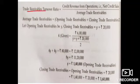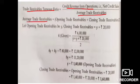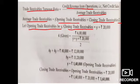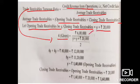Trade receivable turnover ratio = credit revenue from operation / average trade receivable. We know the ratio is 4 and credit revenue is ₹6,00,000. Let opening trade receivable = y, then closing = y + ₹20,000. Average trade receivable = (y + y + 20,000) / 2.